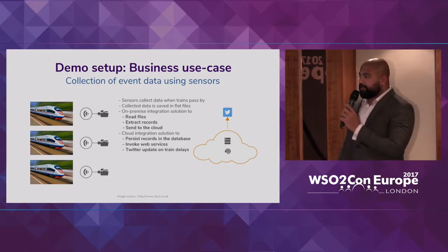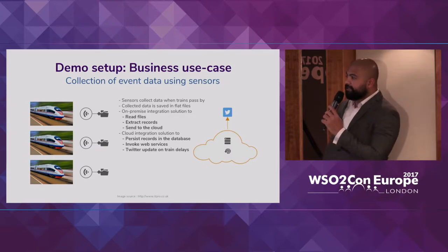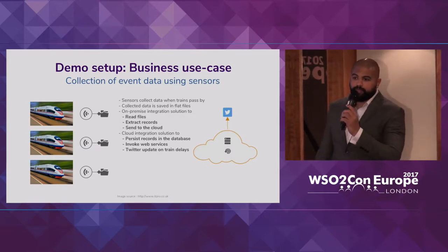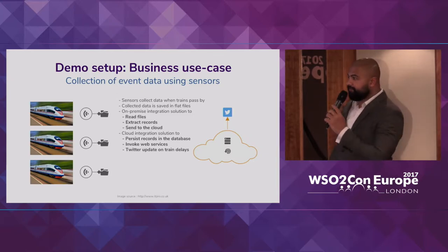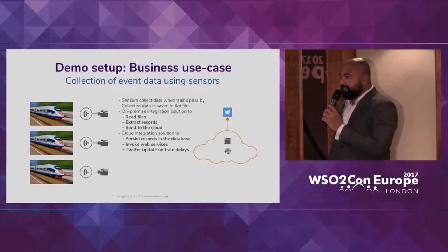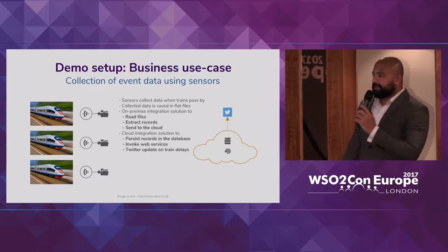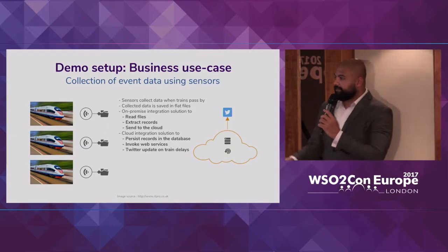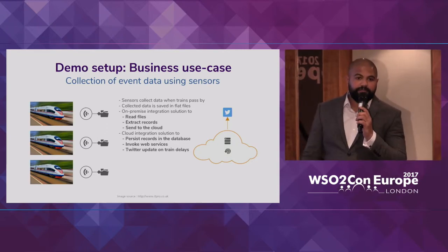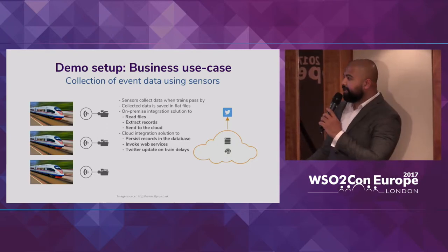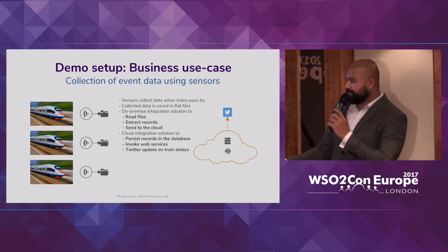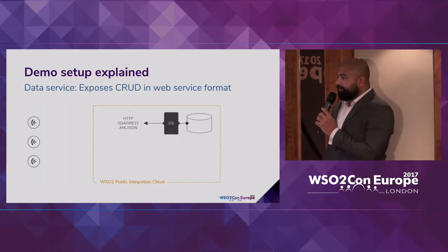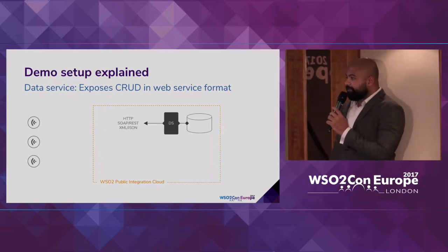Within the Integration Cloud, what we try to do is persist these records in a database for business intelligence kind of work. Within this integration flow, we are actually trying to invoke a few web services and ultimately do a Twitter update for delayed trains, apologizing to the customers. This is the public integration cloud-based setup.